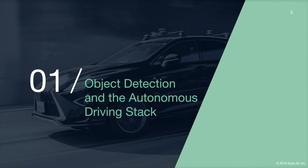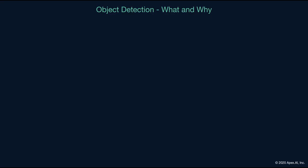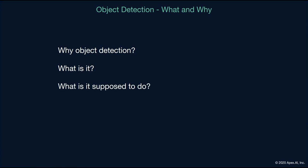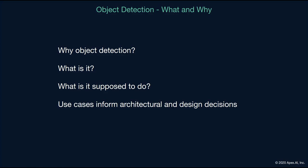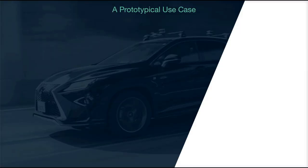In this first section, students will learn about the purpose of object detection and how the object detection stack fits into the larger autonomous driving stack. Before starting any large or complex software component, two things that should first be understood are what you're doing and why you're doing it. In particular for the object detection stack, you first need to understand: why are you doing object detection, what is object detection, and what is it supposed to do? By answering these questions, we can help define a use case, which can then inform architectural and design decisions.